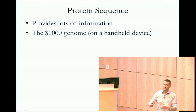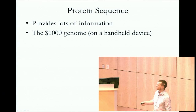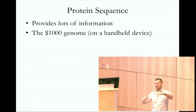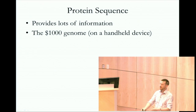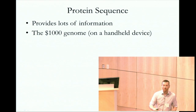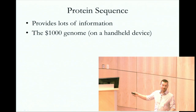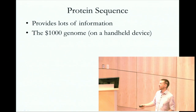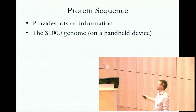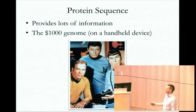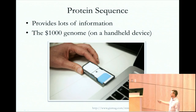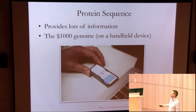From protein sequences, you can infer a huge amount of information, especially when you have lots of them together — you can look for conserved patterns. Not coming from a sequencing background, I was amazed to find out that we can get an entire genome for under $1,000 on a handheld device. To me, this is like Star Trek stuff. But apparently this is what it looks like — it's all very doable. This means we're going to have an avalanche of sequence information.